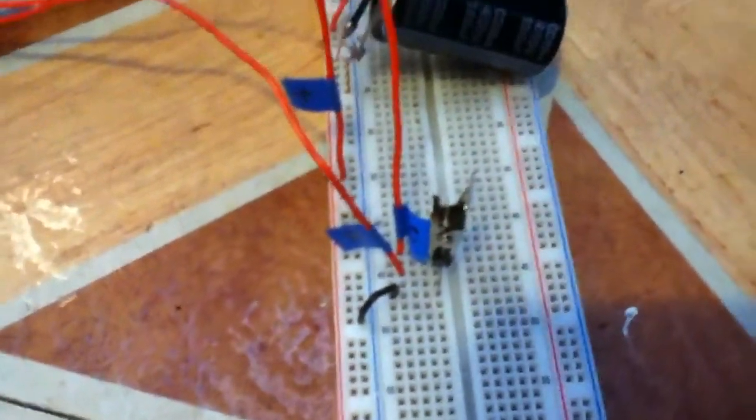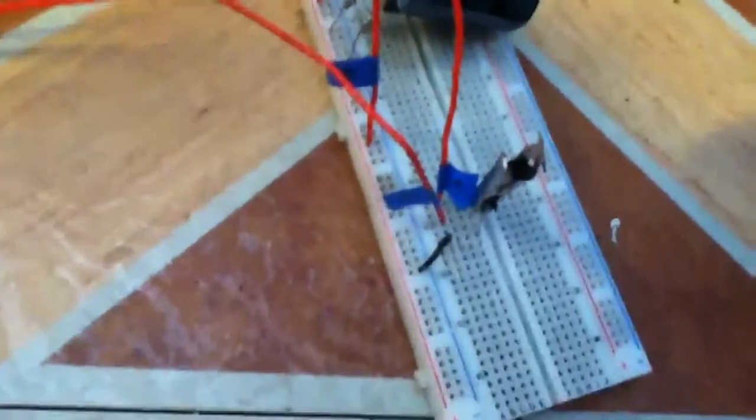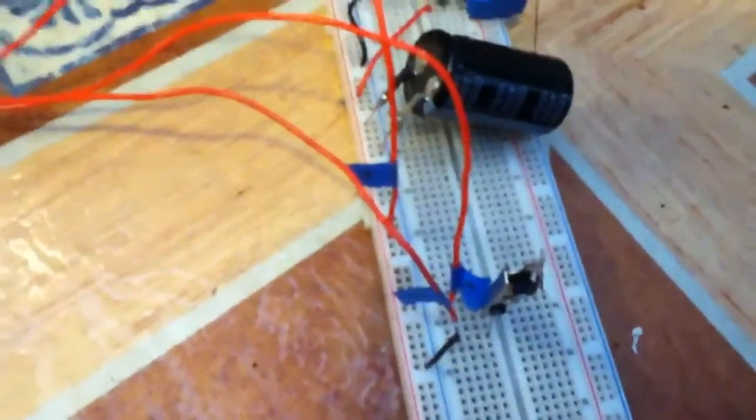And you know what? I put a little heat sink on it. It's one of those alligator clips, just kind of flatten it out. Helps to distribute the heat so it doesn't burn out.